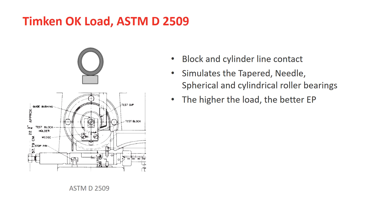The grease Timken OK load test follows ASTM D2509. In a tapered roller bearing, we have line contact, which means the surface of the rollers will be in contact with the outer layer of the cone. This is considered a Hertzian pressure and stress at the contact line. The Timken OK load test equipment is designed to simulate exact industrial applications inside the tribology lab for tapered, needle, spherical, and cylindrical roller bearings.